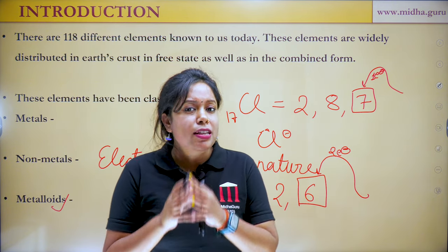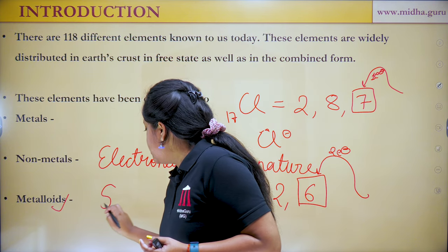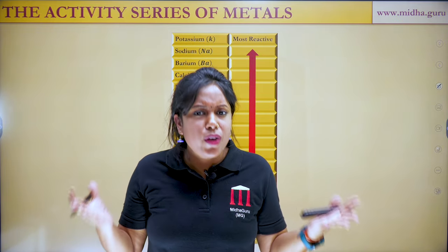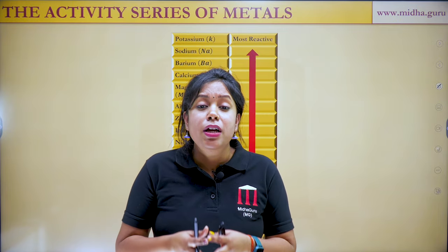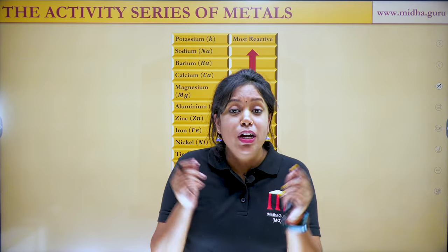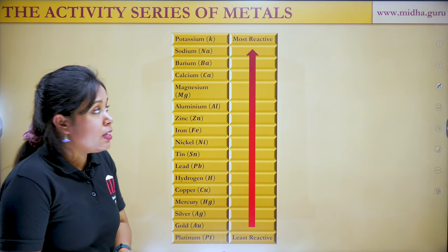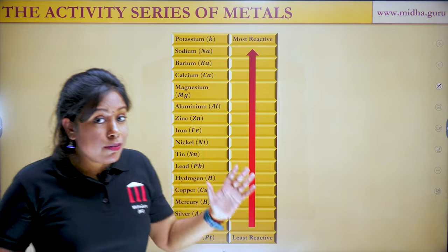Metalloids have some properties of metals as well as some properties of non-metals — for example, silicon and germanium. Now regarding the activity series of metals: different metals show different reactivity based on their electronic configuration. Some metals like sodium and potassium are kept in kerosene oil so they cannot come in contact with air and water, and once they do they react vigorously. While some metals like copper, gold, and platinum do not corrode easily.